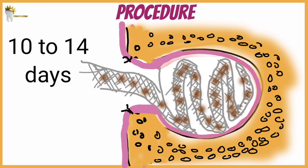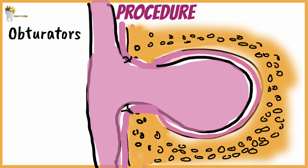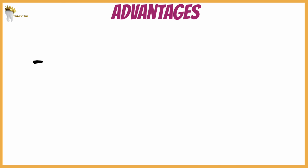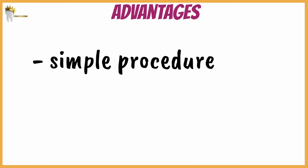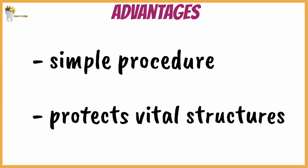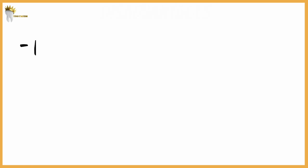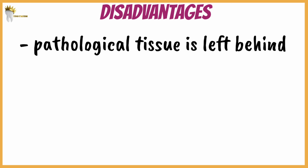By two weeks, the lining of the cyst should be healed to the oral mucosa. The patient must be instructed on how to keep the cavity clean. An alternative to gauze packing is the application of obturators after marsupialization — these have advantages including fewer clinic visits to replace gauze, prevention of food entry into the lesion, and improved hygiene. The obturator size must be reduced at every recall. The main advantage of marsupialization is that it is a simple procedure that can protect vital structures. The main disadvantage is that pathological tissue is left behind without complete histological examination — only a small part of the lining is examined, leaving a major portion unchecked, which could harbor an aggressive lesion.